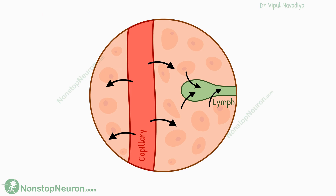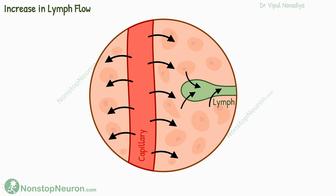The next factor is the increase in lymph flow. As we have seen in the video on lymph flow, an increase in filtration increases the lymph flow, and obviously this prevents the accumulation of fluid. To learn more about lymph flow, watch that topic.